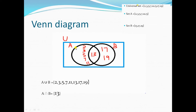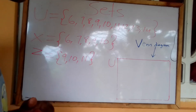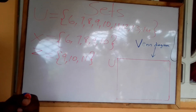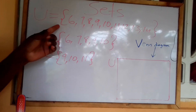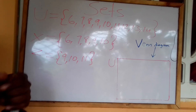This Venn diagram represents the above information with sets A and B. A union B includes all the members in A and B: 2, 3, 5, 7, 11, 13, 17, and 19 — that is, all members in A and all members in B, including the intersection, which is 13.